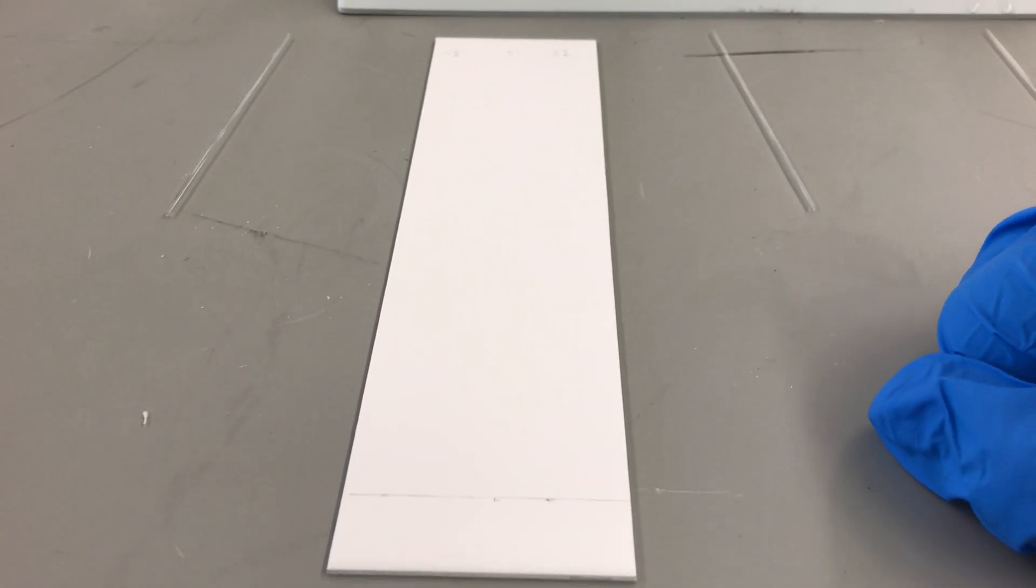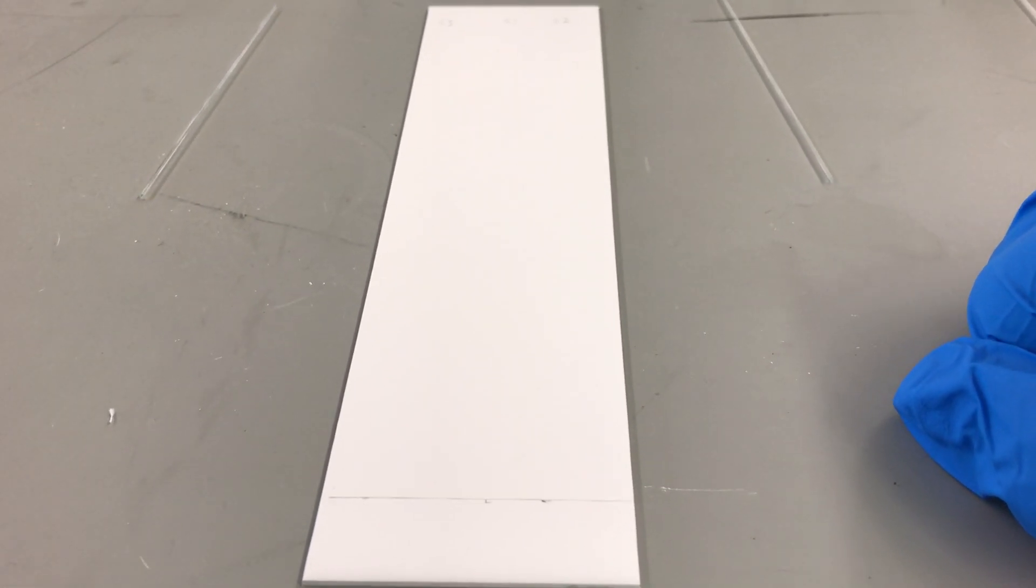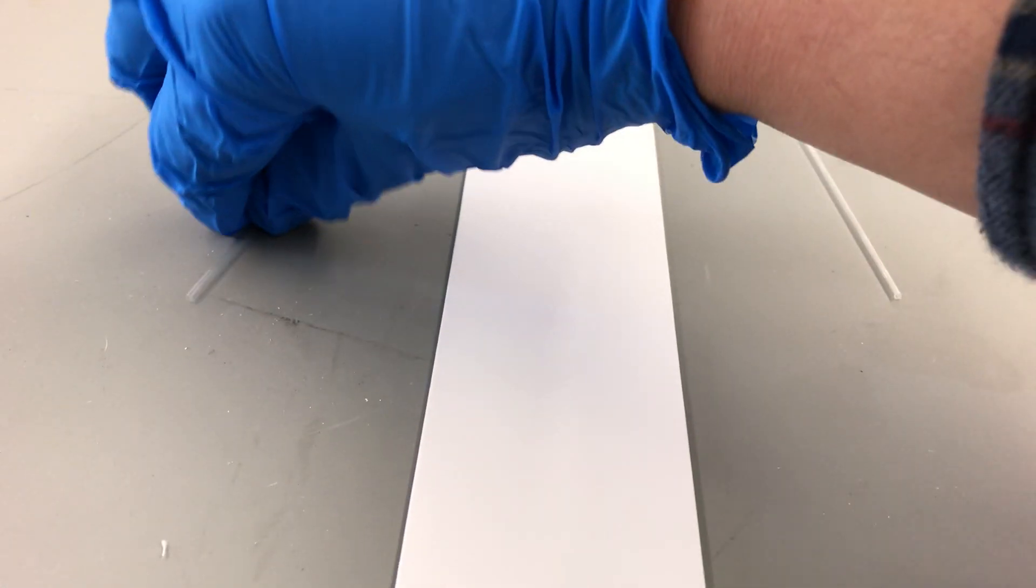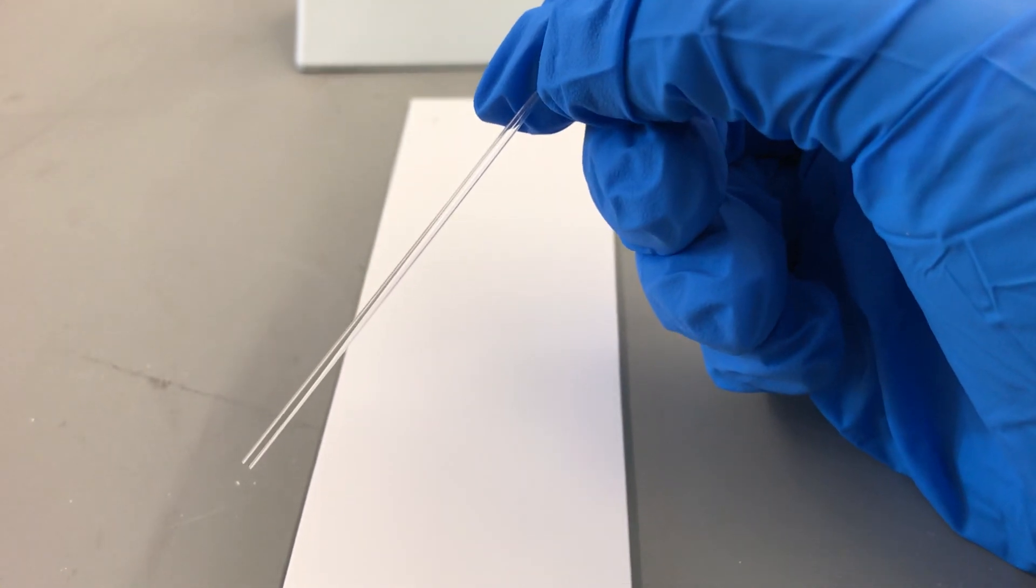Our chromatography plate is all prepared. Now we have to somehow get the lipstick solvent mixture from our test tubes onto our chromatography plate, and the way we do this is with these little glass tubes called capillary tubes.